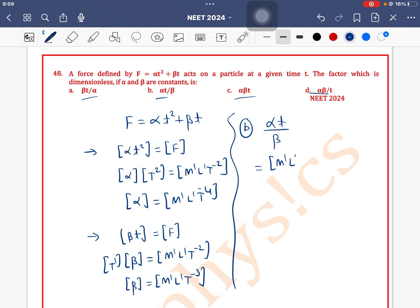Alpha has dimension m¹l¹t⁻⁴ times t which has dimension t¹, divided by beta which has dimension m¹l¹t⁻³. So m¹l¹ and m¹l¹ cancel out, and t to the power minus 4 plus 1 plus 3 equals 0. So it is a dimensionless quantity m⁰l⁰t⁰. Therefore, option b is the correct one.